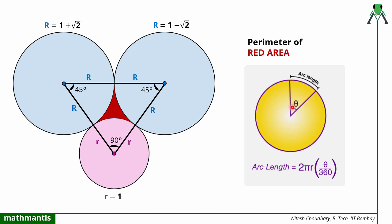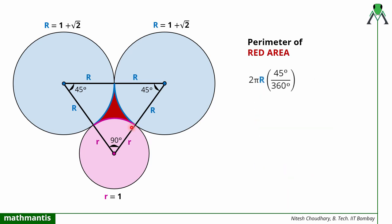Now I will use the arc length formula to define the perimeter of the red area. The arc length formula is 2πr × (θ / 360°). The angles here are 45°, 45°, and 90°, and r is the radius of the corresponding circle. So the perimeter will be: 2π × capital R × (45/360), plus 2π × capital R × (45/360) for these two arcs, plus 2π × small r × (90/360) for this arc.